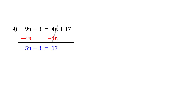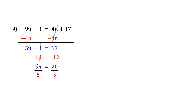This is now a two-step equation. So next, isolate 5n by adding 3 to both sides. On the left, these cancel out, leaving 5n. On the right, we get 20. Finally, divide both sides by 5 to get n by itself. The 5s cancel out, leaving just n. And 20 divided by 5 is 4. So the solution is n equals 4.